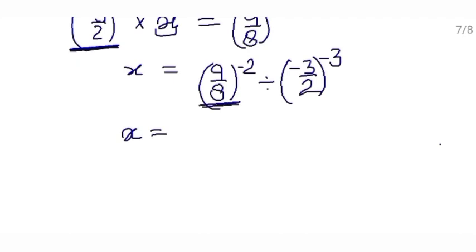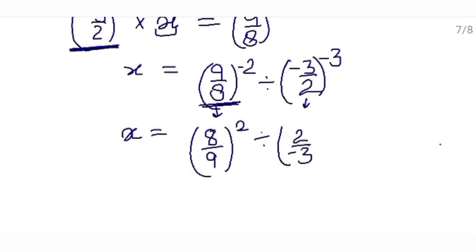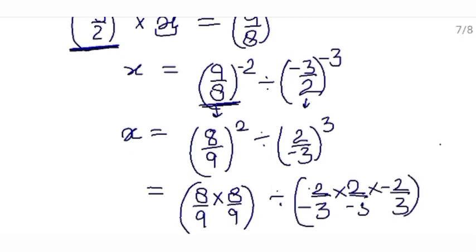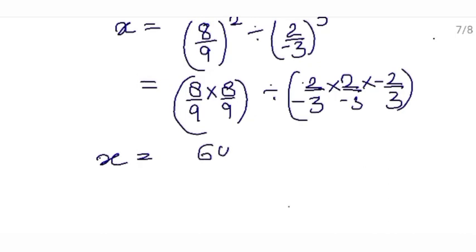To make the powers positive, write the reciprocal of the base: 8 upon 9, and the power will be positive now: 2. Divided by: write the reciprocal of the base, which is 2 upon minus 3, and the power will be positive: 3. So 8 upon 9 is multiplied by itself 2 times, divided by 2 upon minus 3 multiplied by itself 3 times: 2 upon minus 3. So x equals — 8 × 8 is 64 upon 9 × 9 is 81 — divided by 2 × 2 × 2 is 8 upon minus 3 × 3 × 3 is minus 27.